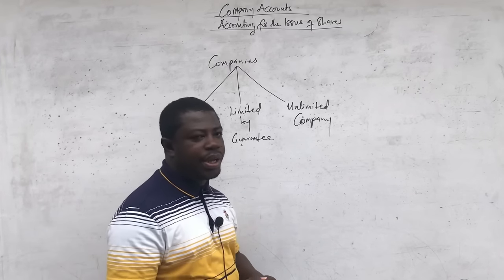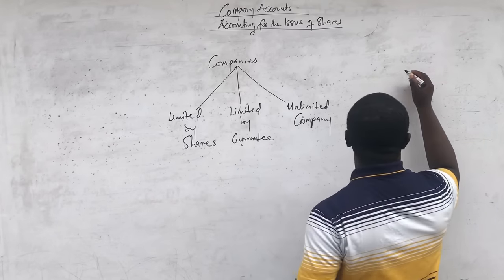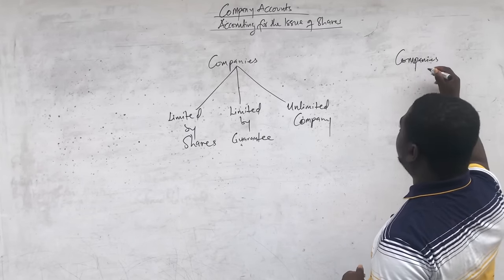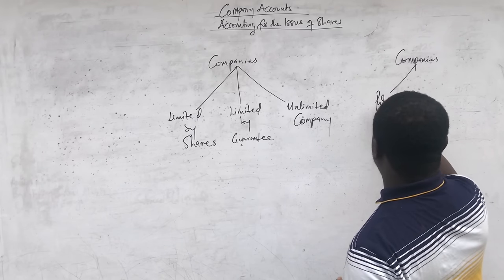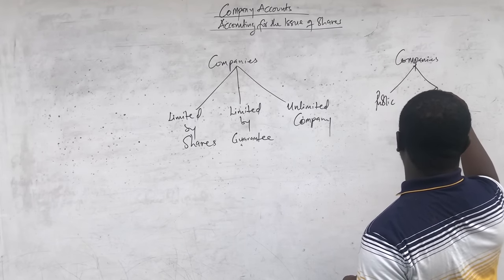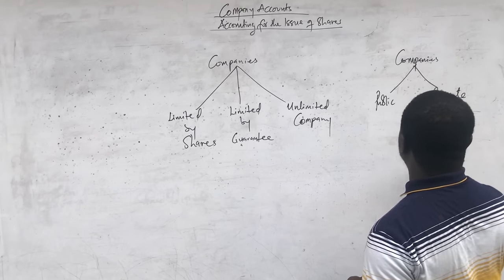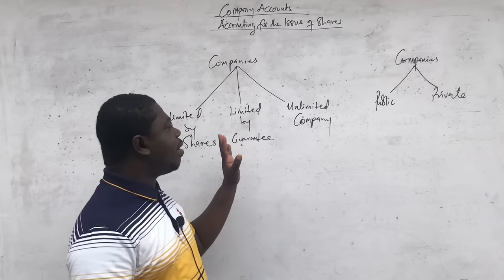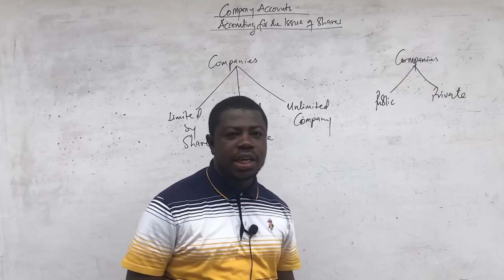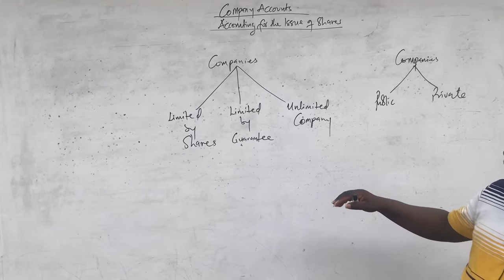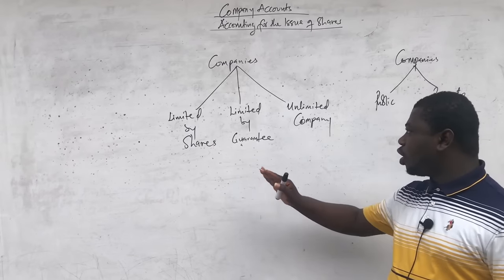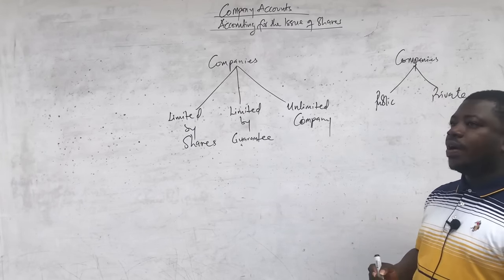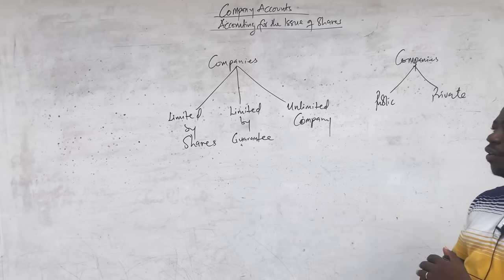You can also look at companies from another angle — as a public company or a private company. You have to study the characteristics of each of these types: a company limited by shares, a company limited by guarantee, an unlimited company, and then a public company and a private company.